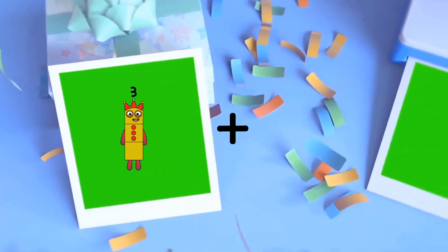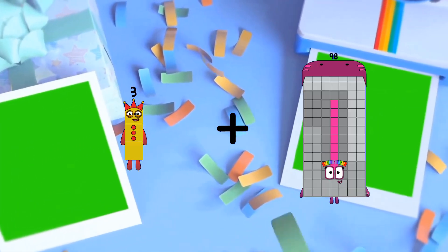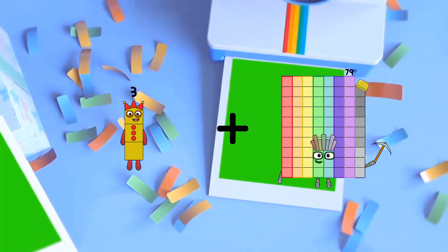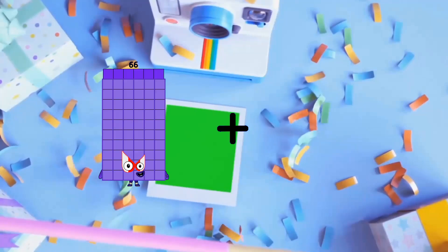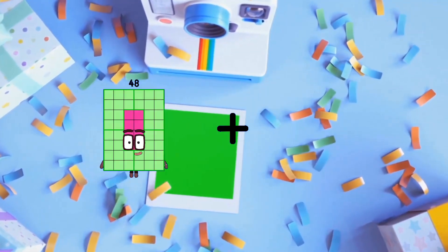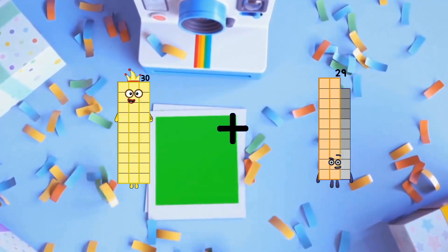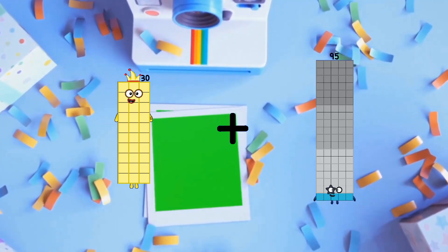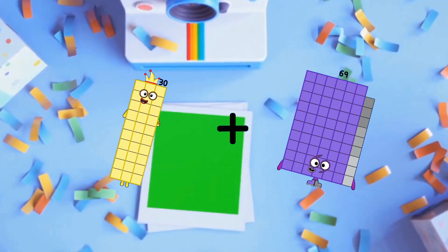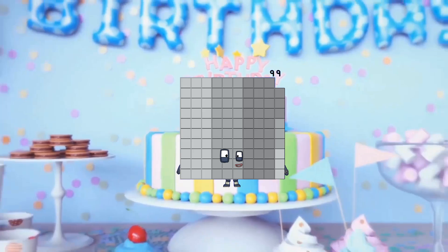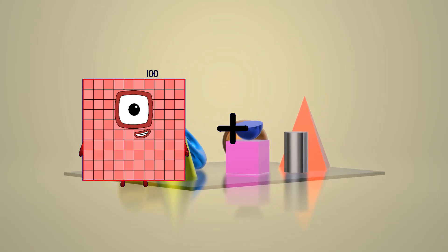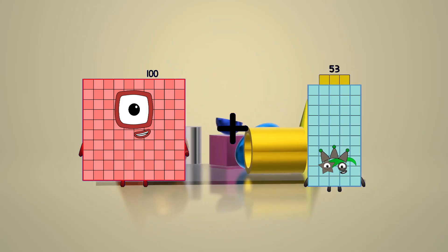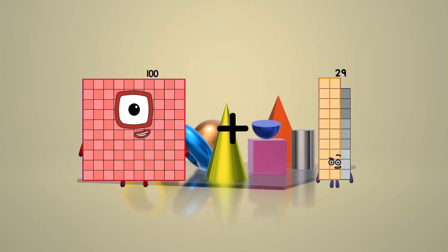3 plus 79 equals 82. 30 plus 69 equals 99. 100 plus 29.